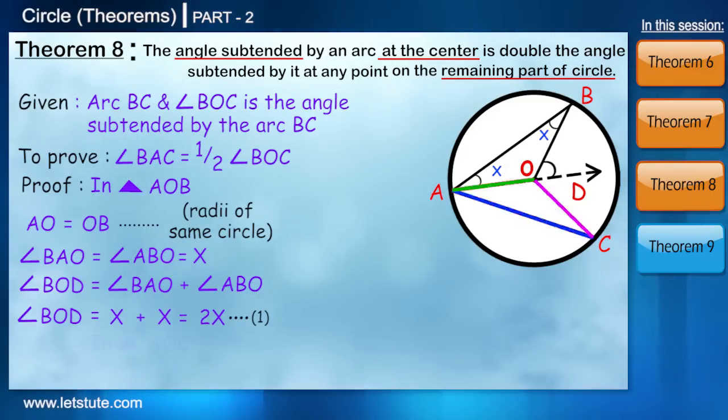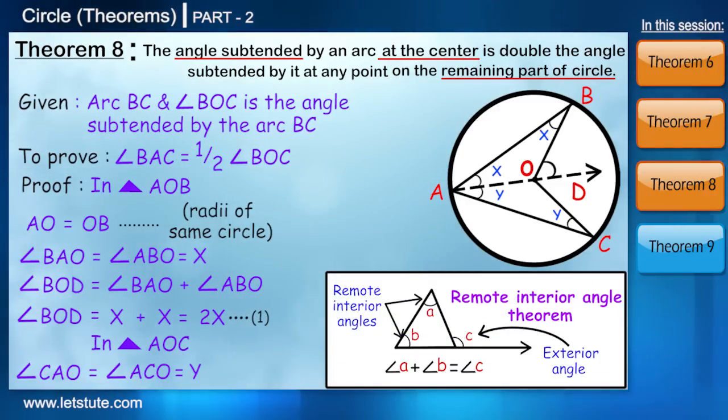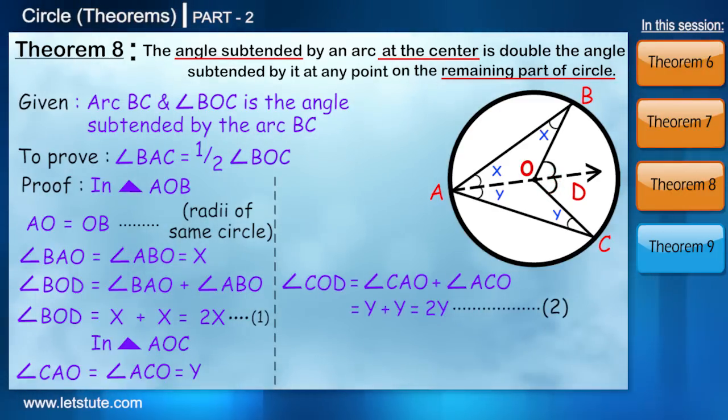Similarly in triangle AOC, we can say that angle CAO is equal to angle ACO which is equal to Y. Therefore, we are going to use exterior angle theorem again in here. And using that, we can say that angle COD is equal to 2Y.